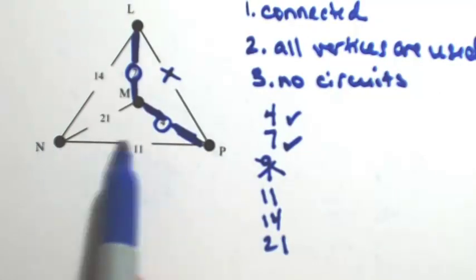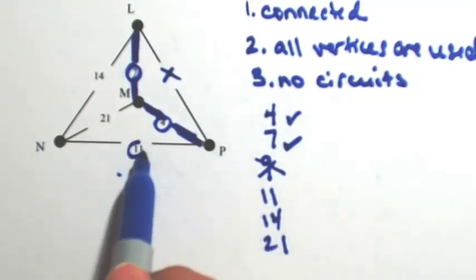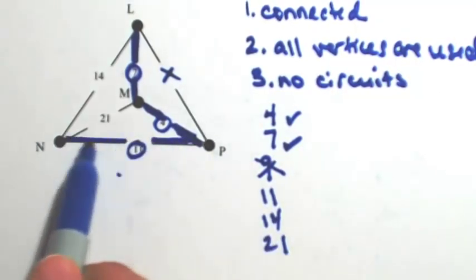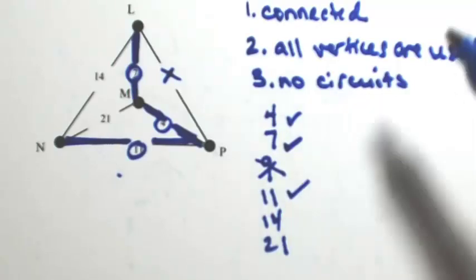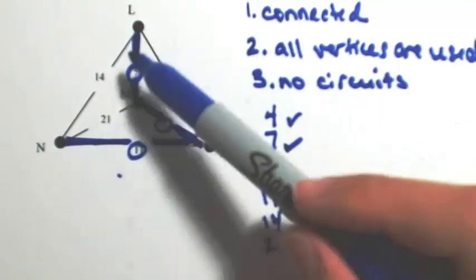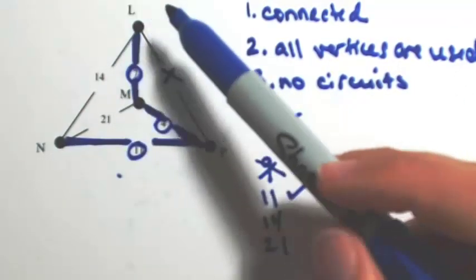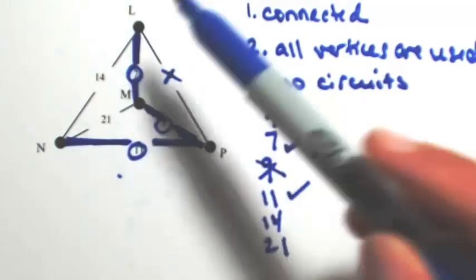The 11 doesn't create a circuit. If I use the 14, that would close out the circuit between L, M, P, and N. So I'm not going to use that.